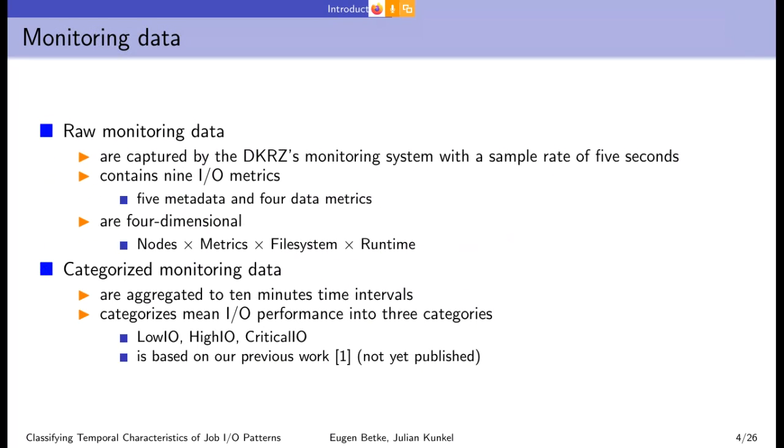So at the Carchet we have a monitoring system that provides I/O data. It captures nine I/O metrics in intervals of five seconds. So five metrics are metadata metrics and four data metrics. The captured data is four dimensional because we capture data from allocated nodes, available file systems, nine metrics, and during runtime.